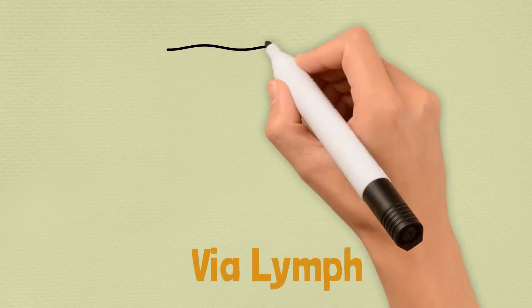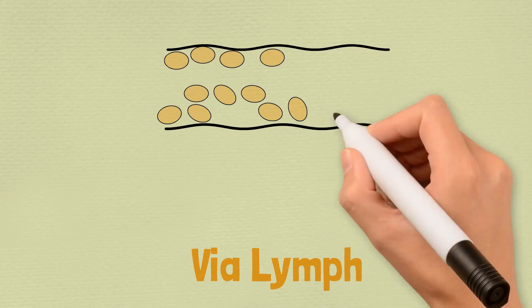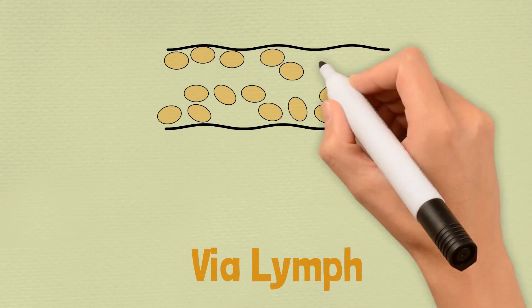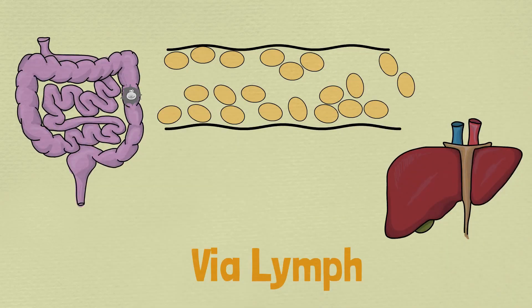Secondly, via lymph. Lymph is a fluid similar to blood which drains the human body through lymphatic channels. Lymph mostly contains white blood cells responsible for the body's immunity. Cancer cells disengage from the tumour and pass alongside lymph. They come to wherever lymphatic flow is sluggish and begin multiplying.